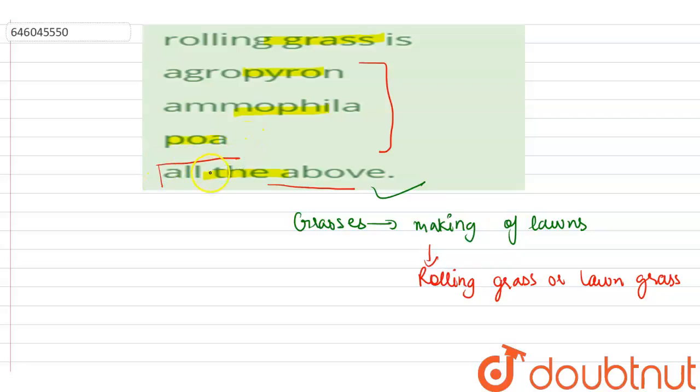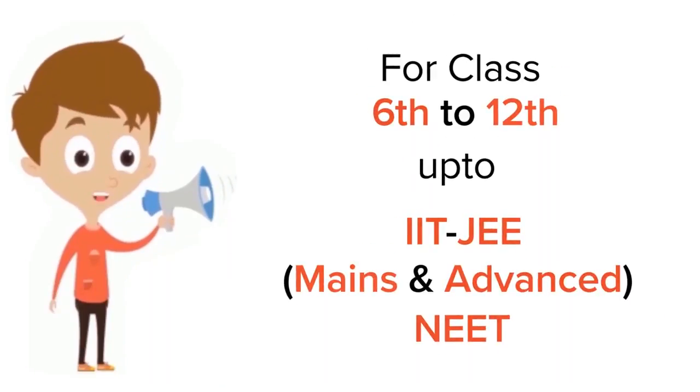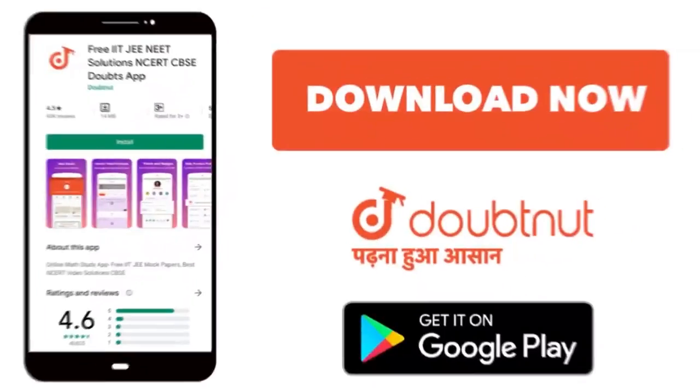Thank you. For class 6 to 12, up to IIT-JEE Mains and Advanced and NEET level, trusted by more than 5 crore students. Download Doubtnet app today.